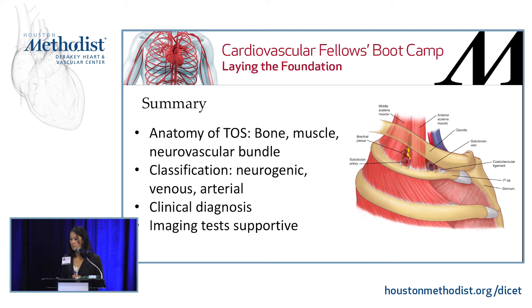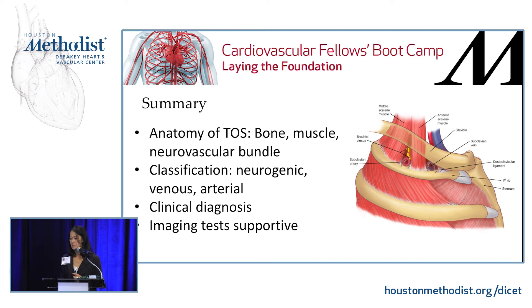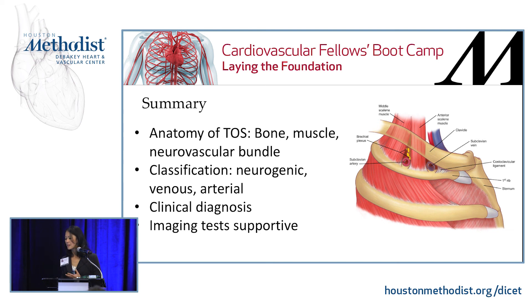In summary: anatomy is critical when dealing with TOS — remember the relationship between bone, muscle, and the neurovascular bundle. There are three classifications: neurogenic (most common, ~95%), venous (second most common), and arterial (least common). The diagnosis is primarily clinical, and all imaging and testing is to support the clinical diagnosis.